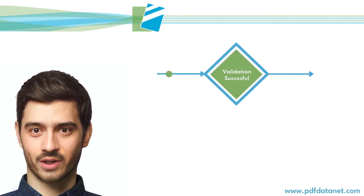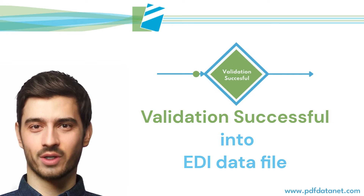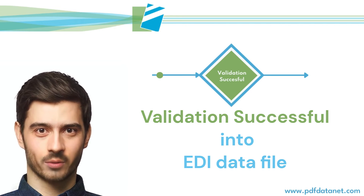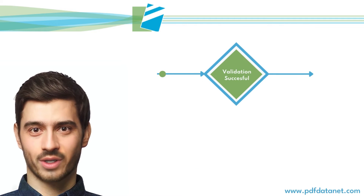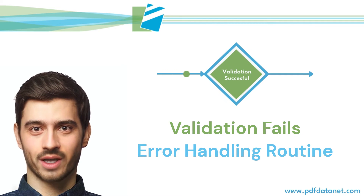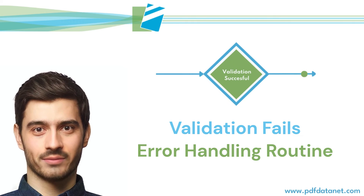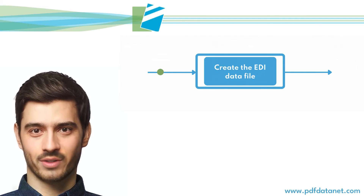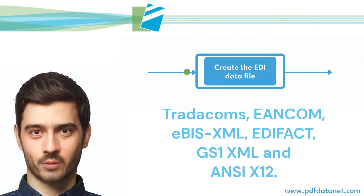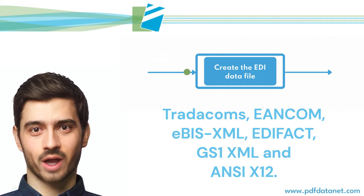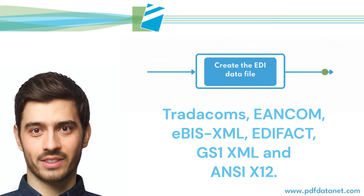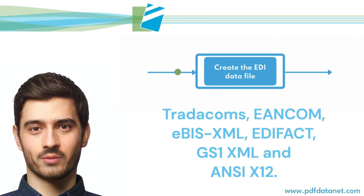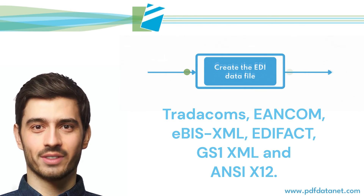If the data validation step is successful, the order or invoice will be converted into an EDI data file. Any failure of the user-defined business rules will route the document into the error handling process. The EDI data file is then passed to your EDI solution for uploading into your ERP system.